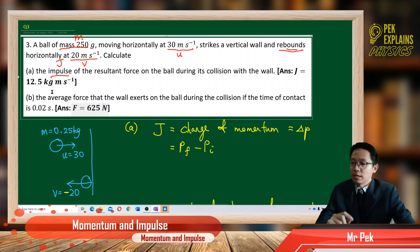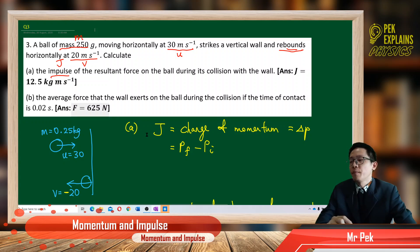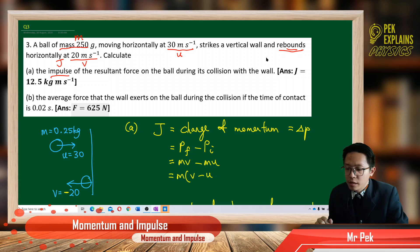So when we go to the opposite direction, rebound, we must put a negative sign for the final velocity. So calculate the impulse of the resultant force. So what is actually impulse? Impulse is the change of momentum, or delta P. So change of momentum is P final minus P initial. So let us continue with these questions. So P final is Mb. P initial is Mu. We can factorize out the mass, Mb minus U.